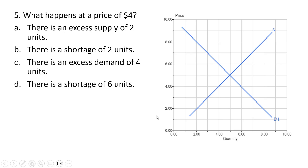Question 5. What happens at a price of $4? Anytime the price is below the equilibrium price, we're going to be dealing with a shortage or excess demand, so we can eliminate answer choice A — there's not a surplus or excess supply. At a price of $4, reading off the supply curve, quantity supplied is 4. Reading off the demand curve, quantity demanded is 6. So quantity demanded exceeds quantity supplied by 2 units — there is a shortage of 2 units. Answer choice B.